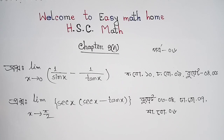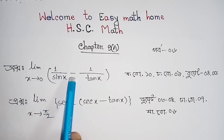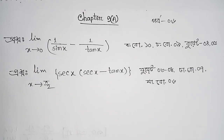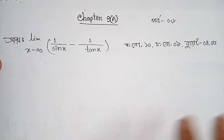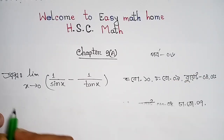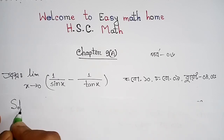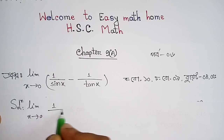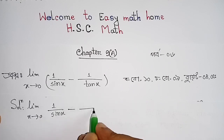The problem is: limit x approaches 0 of (1/sinx minus 1/tanx). We will now look at the solution.